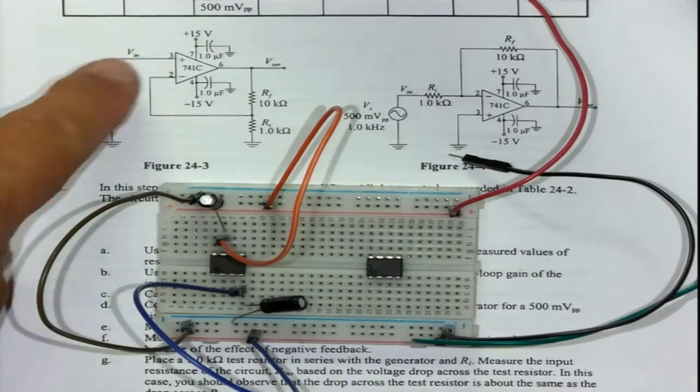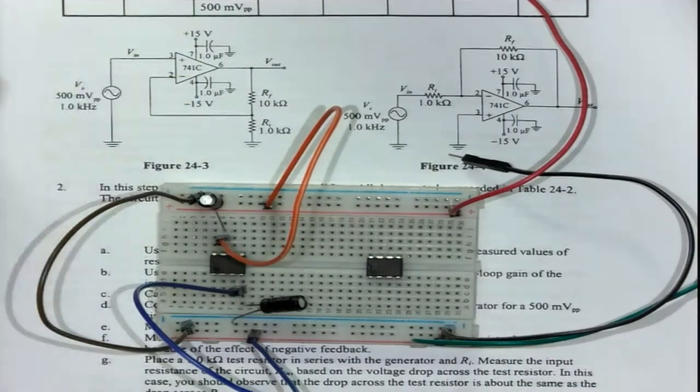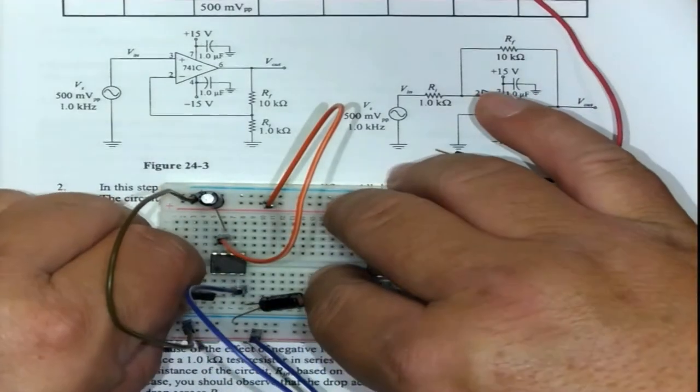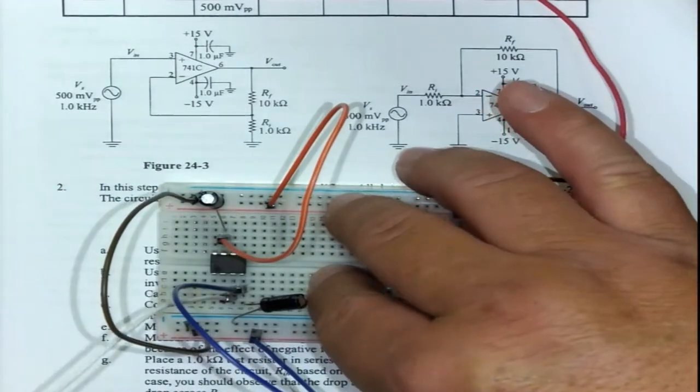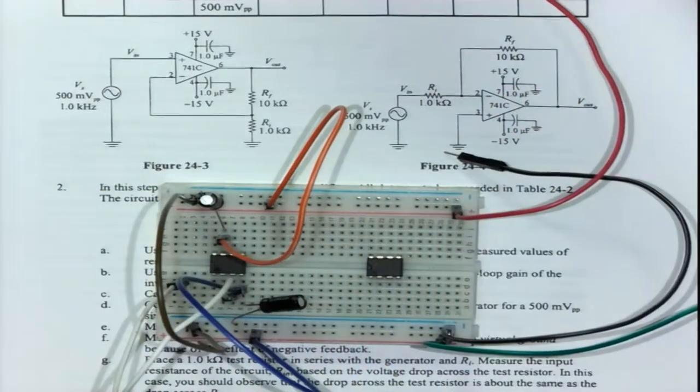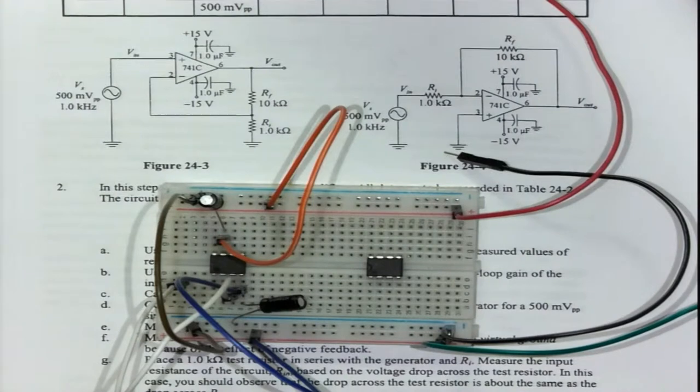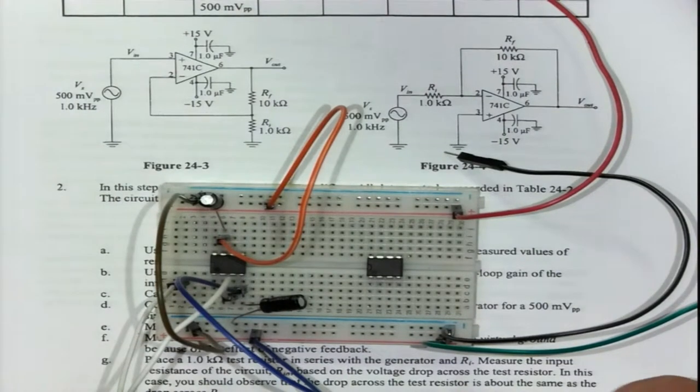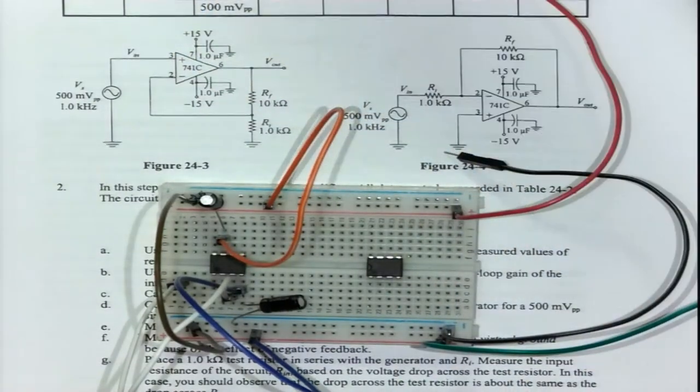Then they ask us VIN. VIN will be on pin number 3. Pin number 3 is going here. I can just stick it in here, or I can bring a probe from the instrument and connect it to the breadboard. It doesn't matter.